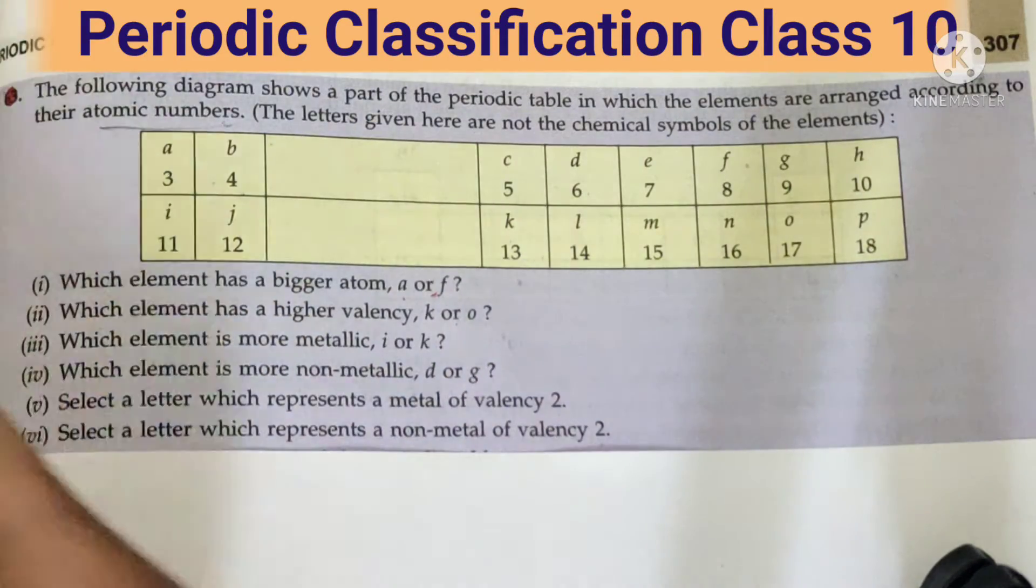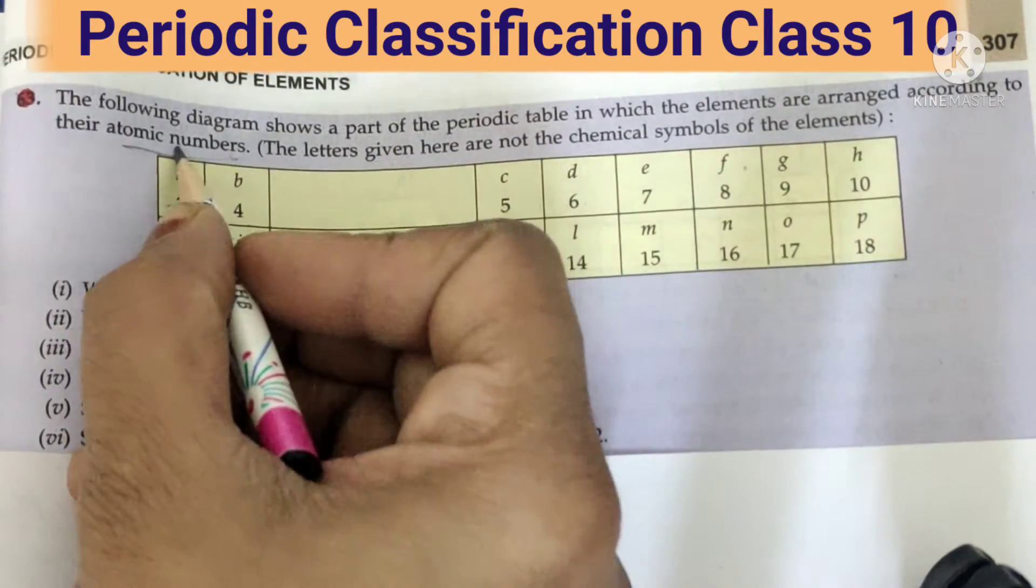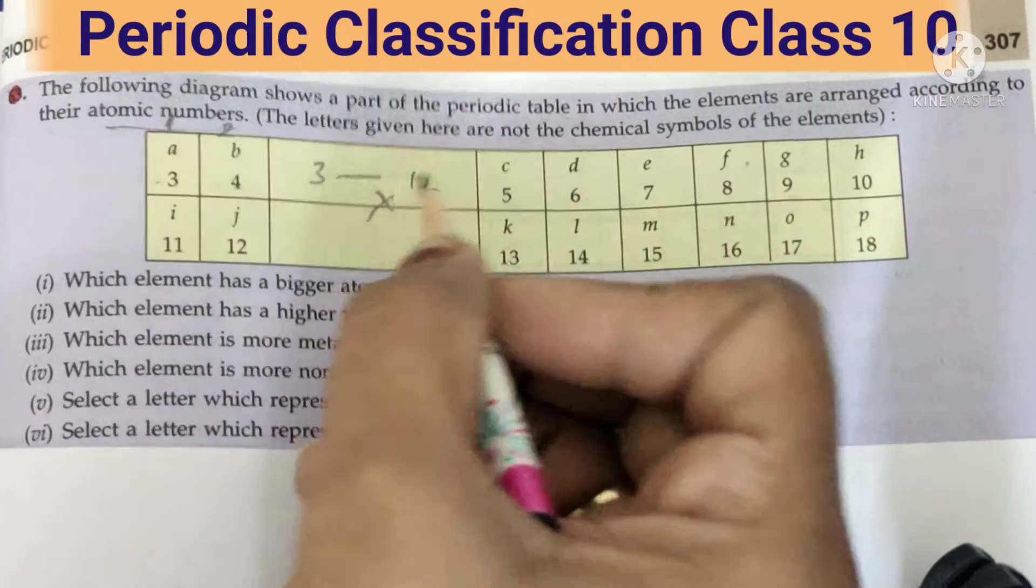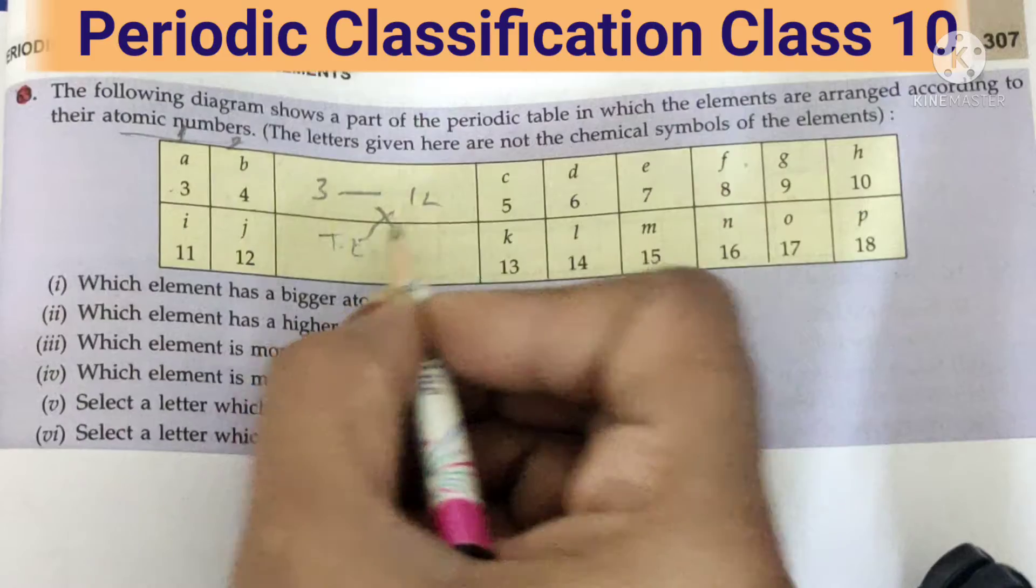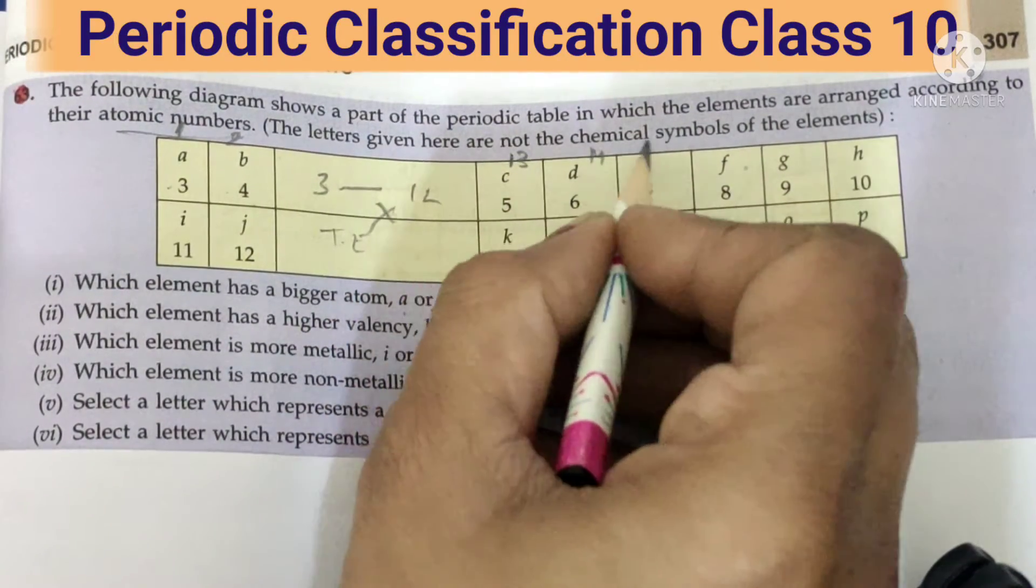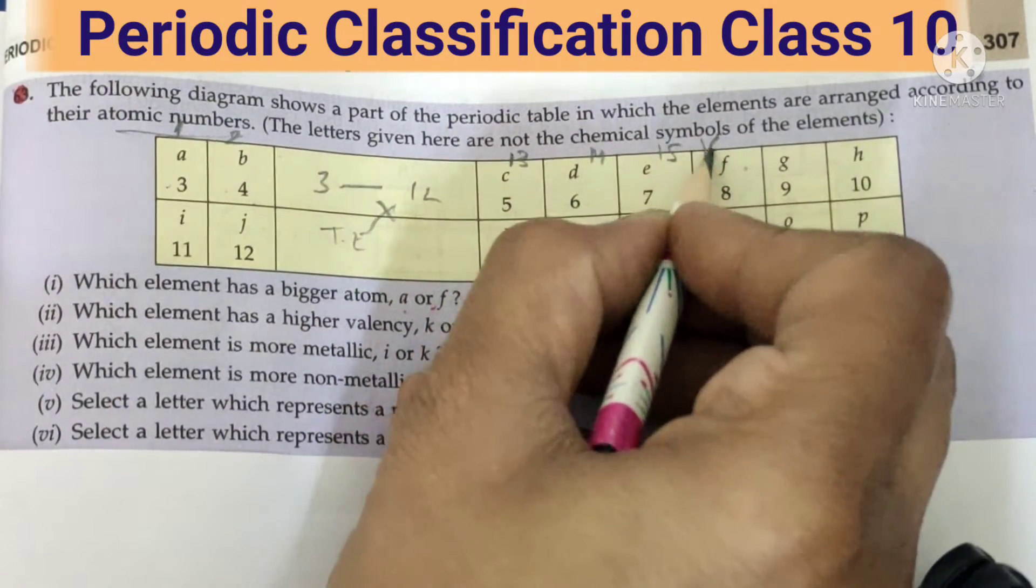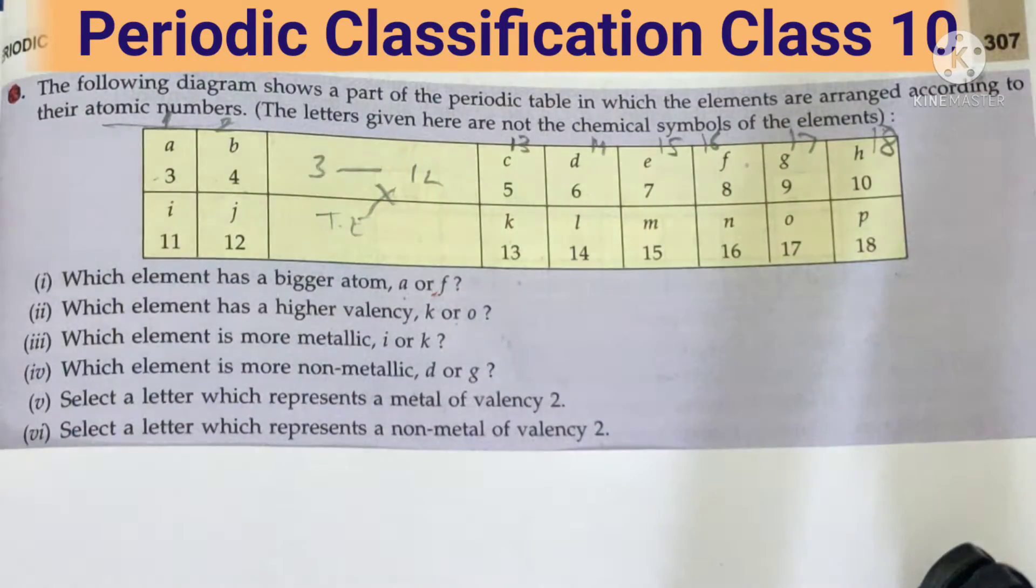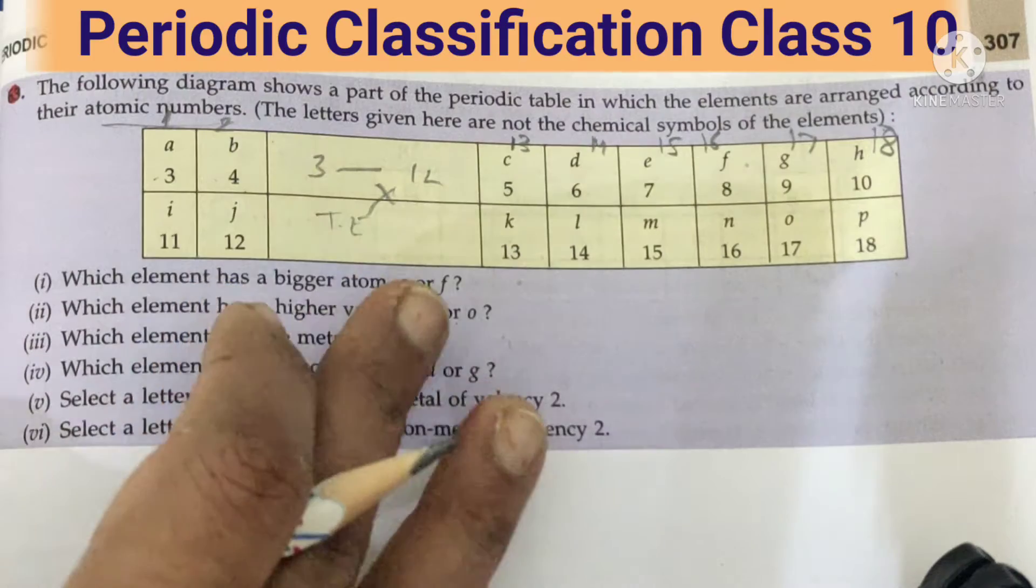Let's see. This is group number 1, this is group number 2. Three to twelve we don't study, we skip them, those are transition elements. This is group number 13, this is 14, this is 15, this is 16, this is 17, and this one is 18. Always write it in this way so that it will be clear for you.